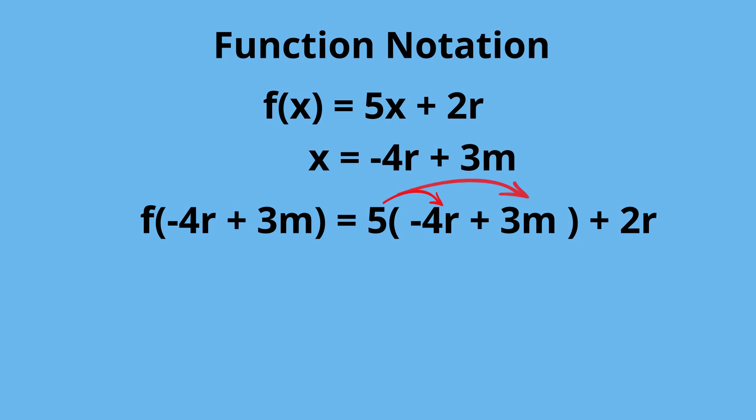Let's use the distributive property. So you get f of negative 4r plus 3m equals negative 20r plus 15m plus 2r.